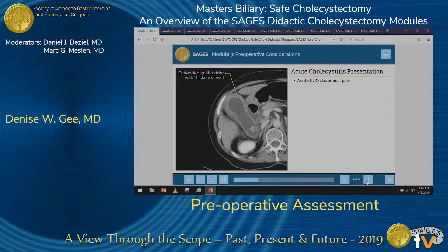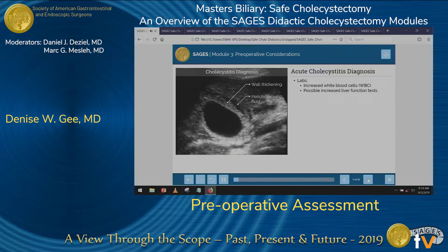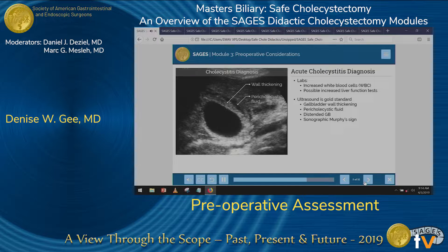In a typical patient presenting with acute cholecystitis, they come in with acute right upper quadrant abdominal pain that can radiate across the upper abdomen as well as to the back. They may have fever or a positive Murphy sign. Here's an image of a distended gallbladder with a thickened wall. Labs may include an increased white blood cell count as well as the potential for increased liver function tests. Ultrasound is the gold standard imaging technique, demonstrating gallbladder wall thickening, pericholecystic fluid, distension, and potentially a sonographic Murphy sign.